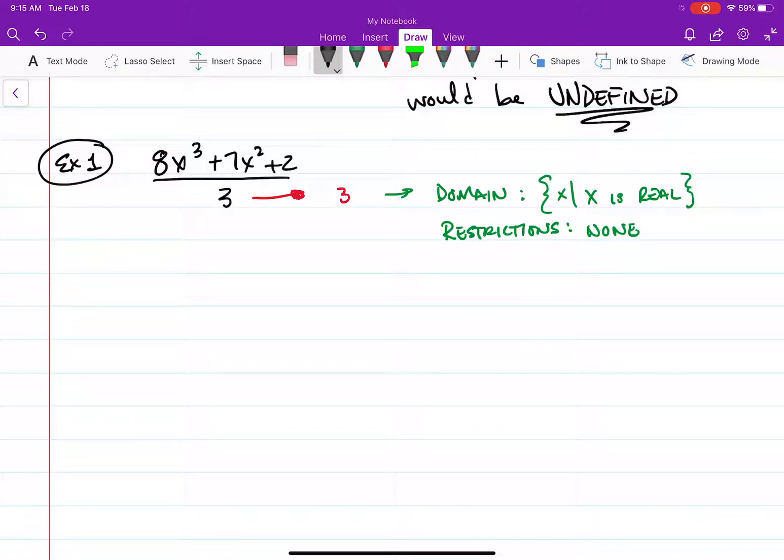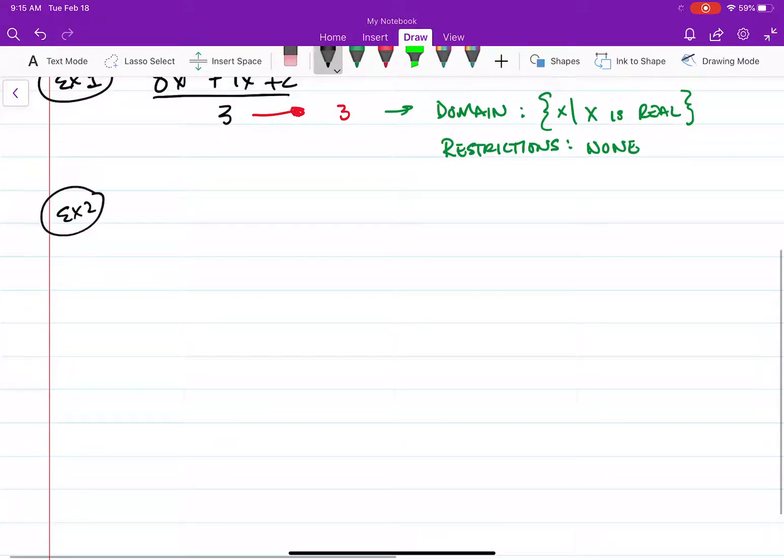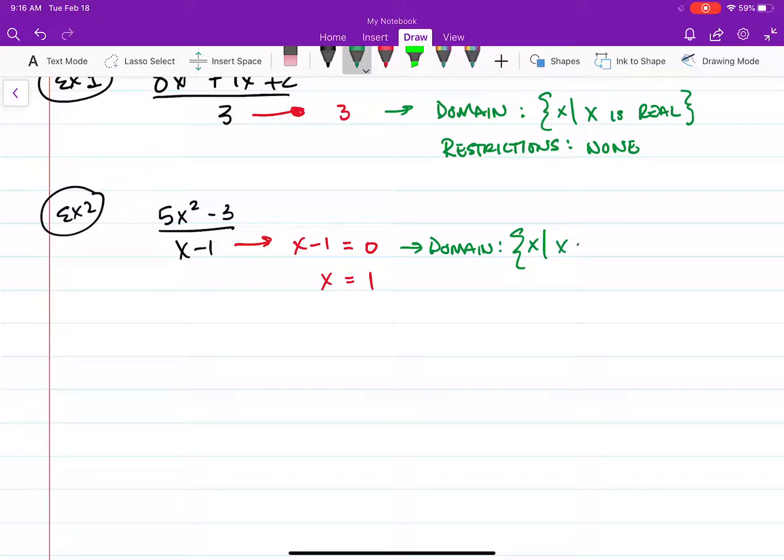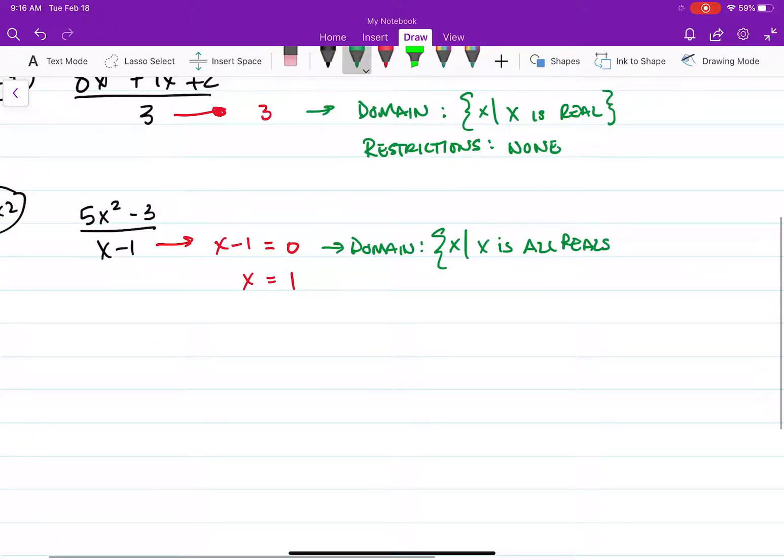Let's take another example: 5x squared minus 3 over x minus 1. So if we look at this, there is an x value that would make that denominator zero. Simple thing to do is set this denominator equal to zero. Let's find out what would make it zero. So if x was equal to 1, it would make this denominator zero. So therefore our domain would be for all x, x is all reals, and x cannot equal 1.